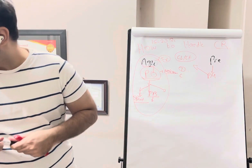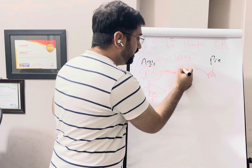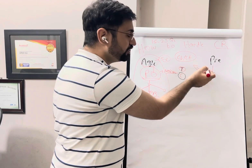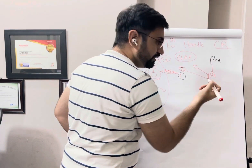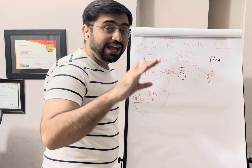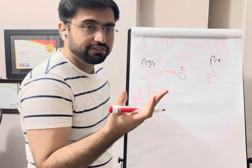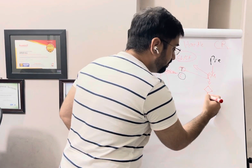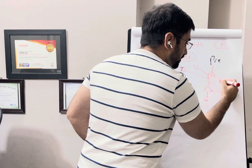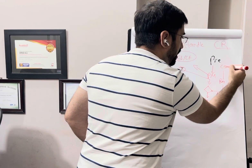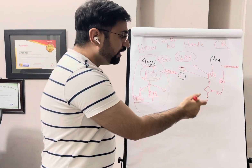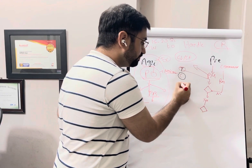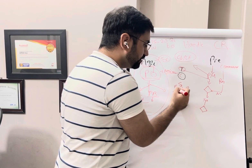The team logs the change in the change log and it comes to the PM. The PM evaluates the change. If the change is needed and affects the deliverables, it moves to the next step. If it does not affect the deliverables, the change is rejected and communicated back to whoever requested it.